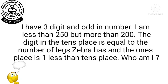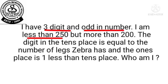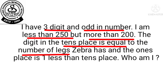So children, first you will see what information is given to you. In the first line you can see it is a 3-digit number and it is odd. In the next line you can see it is less than 250 but more than 200. In the next line you can see the 10th place digit is equal to the number of legs a zebra has.